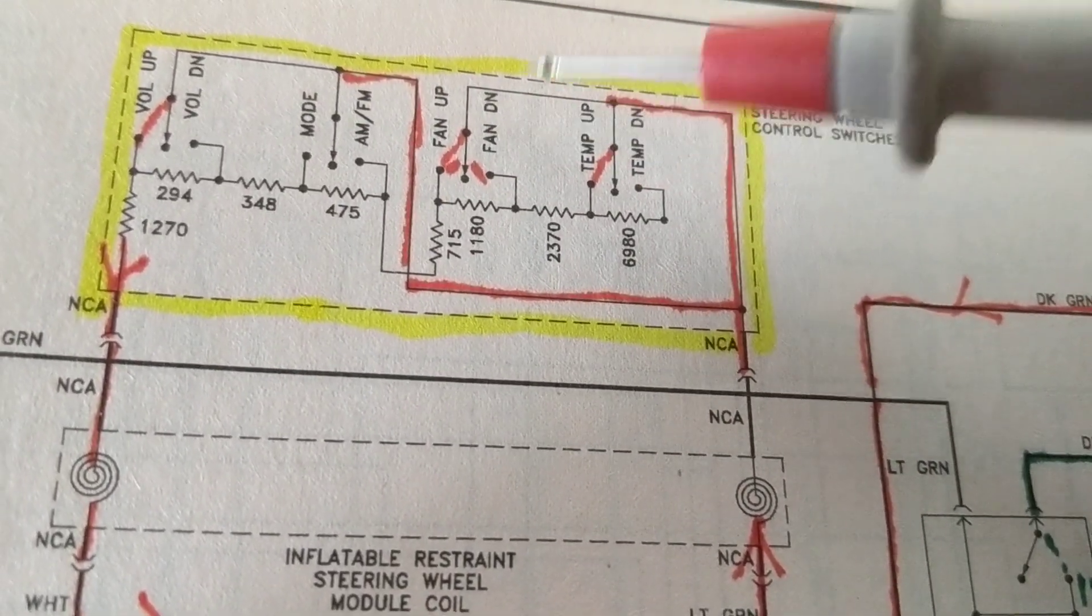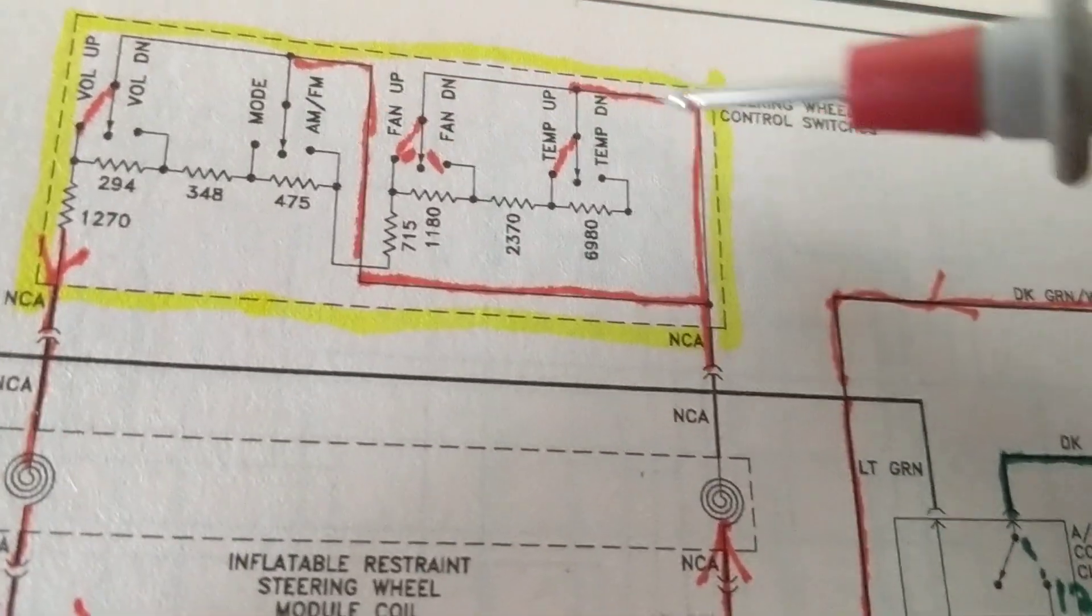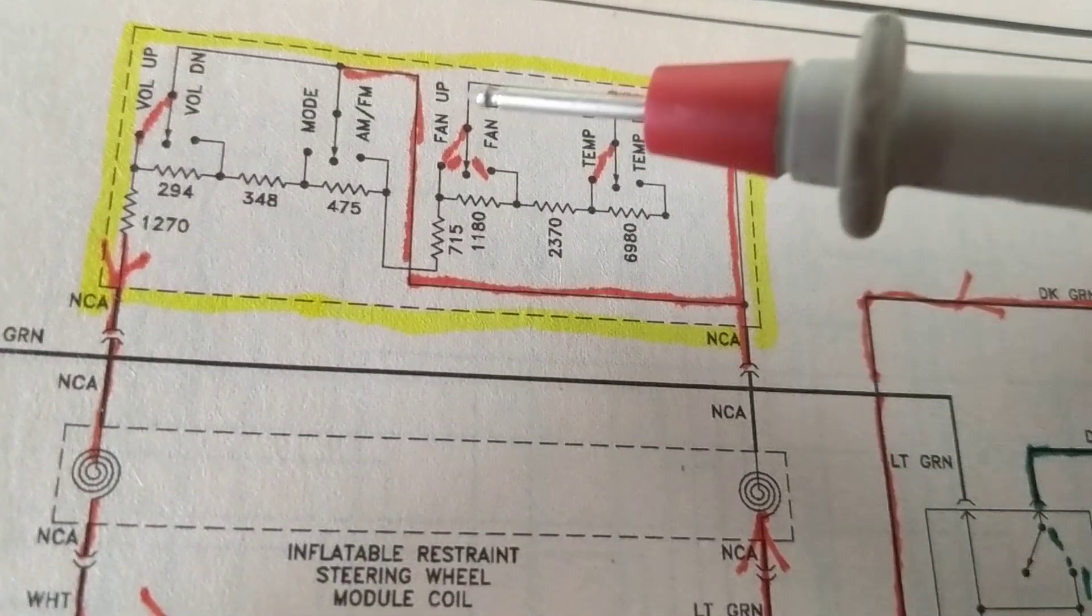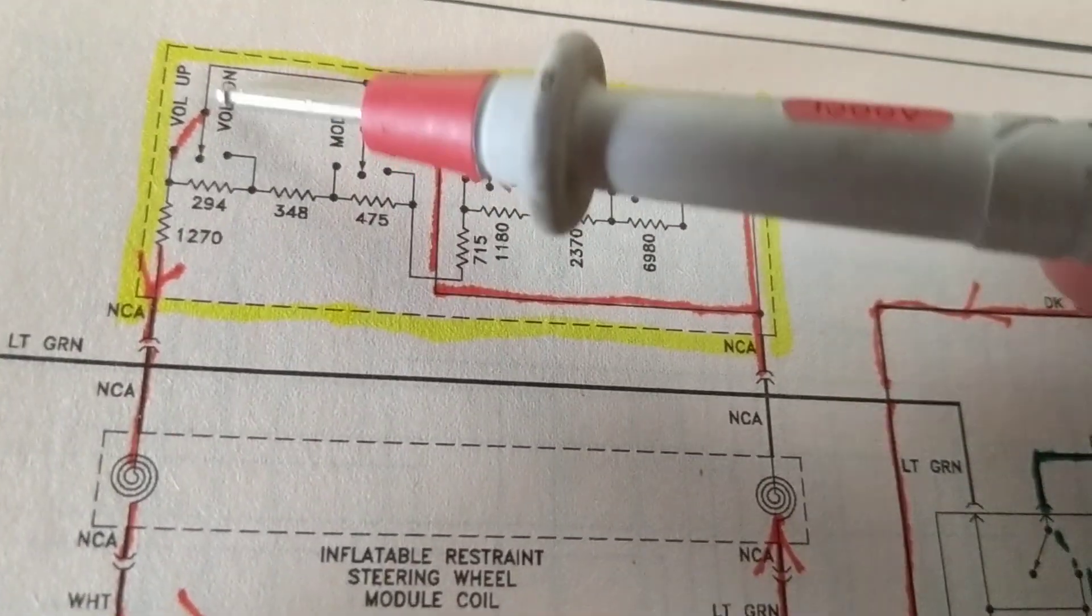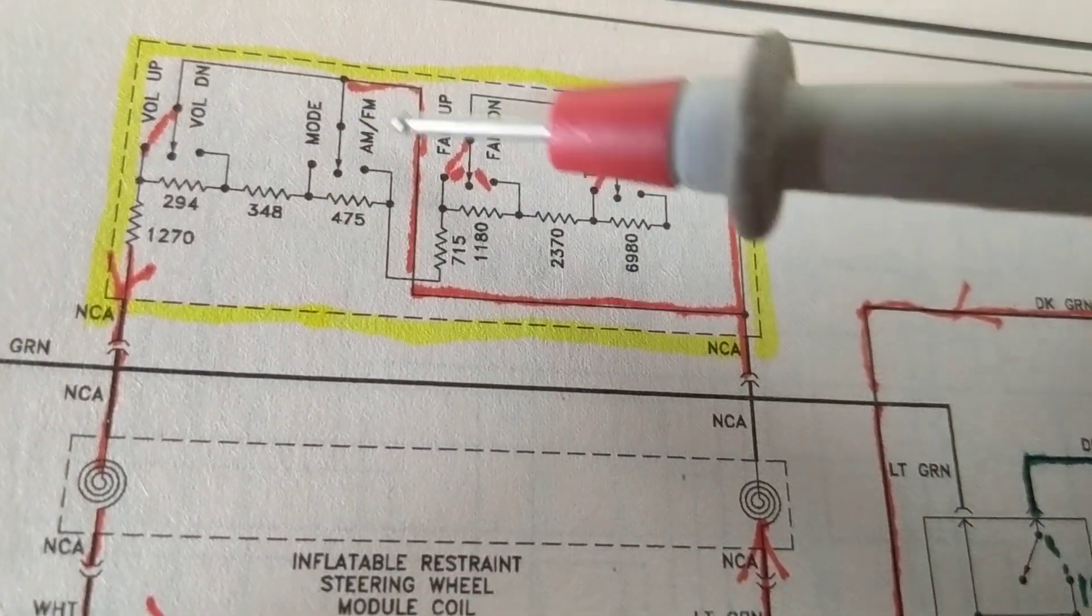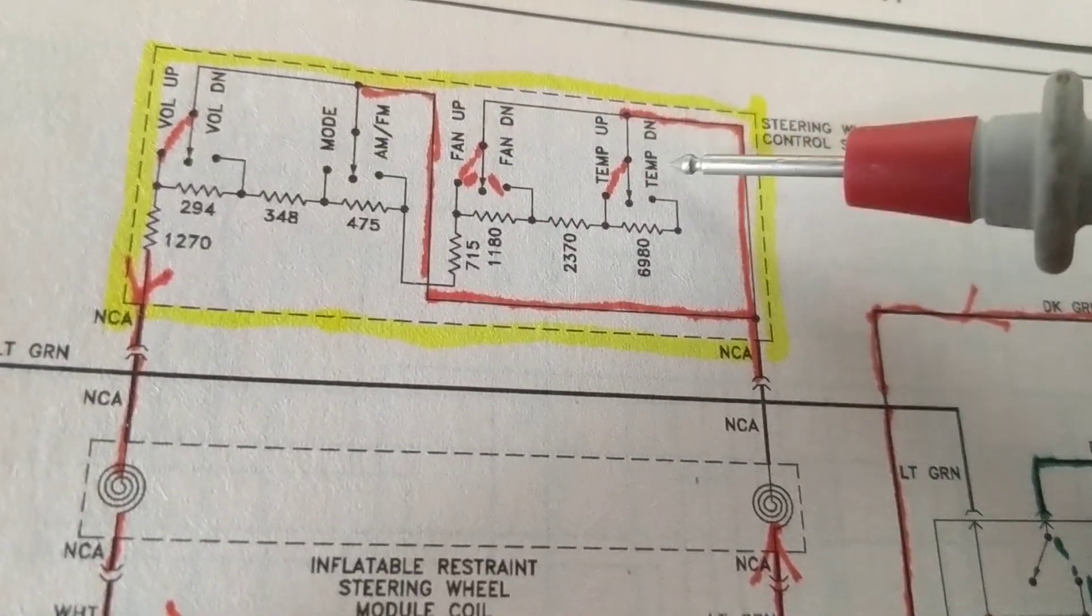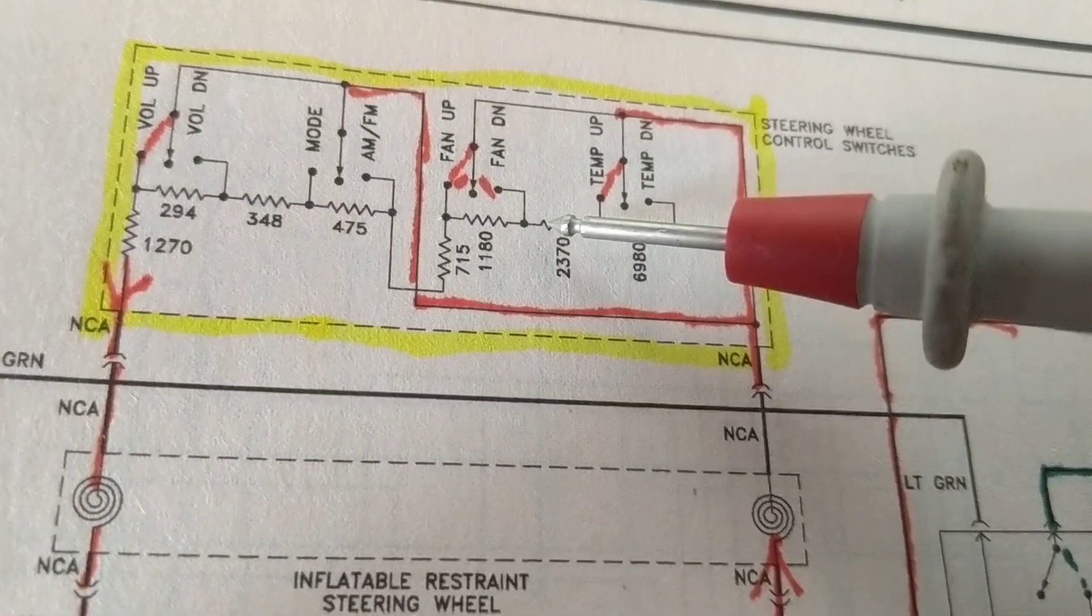You can control the fan, the temperature of your car, and they are available on your steering wheel. As you see over here, these are the options: volume up and down, mode for AM and FM, fan up and down, and temperature up and down. These are available on your steering wheel.